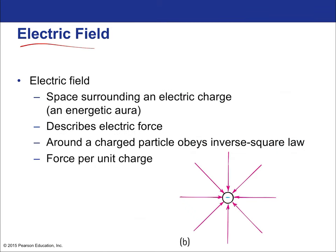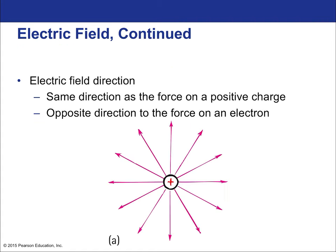To understand these ideas, let's talk about the abstraction called the electric field. The electric field is a force field—it is drawn with field lines, and it denotes the idea of force. The electric field is the space surrounding electrical charge, an energetic aura that describes electrical force around a charged particle. It obeys the inverse square law and represents force per unit charge.